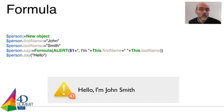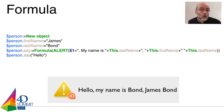For example, if I change the properties first name and last name, I can also change the 'say' command to adapt to the properties of the object, so that I can change the behavior of the object according to the data.